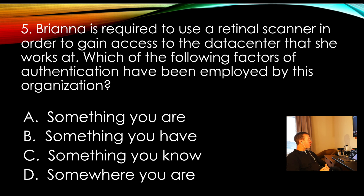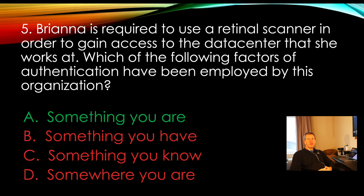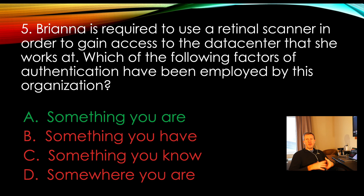Let's move on to question number five. Brianna is required to use a retinal scanner in order to gain access to the data center she works at. Which of the following factors of authentication have been employed by this organization? Is this something you are, something you have, something you know, or somewhere you are? When we're talking about a retinal scanner, that is going to be something that you are. Biometrics describe using retinal scanners, iris cameras, voice recognition, facial recognition, fingerprint readers, palm geometry scanners, and all sorts of different things.